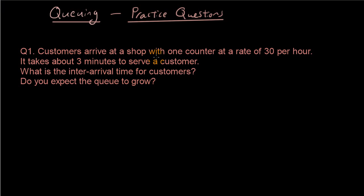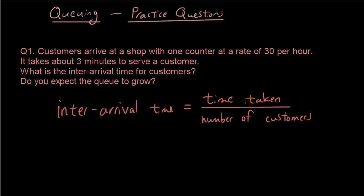Customers arrive at a shop with one counter at a rate of 30 per hour, and the shop only has one service point. It takes about three minutes to serve a customer. What is the inter-arrival time? I'll give you an easy formula for getting inter-arrival time: the time taken divided by the number of customers arriving during this time.